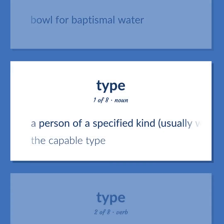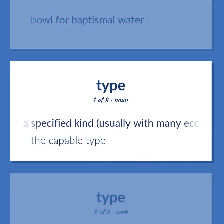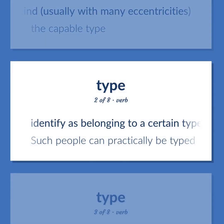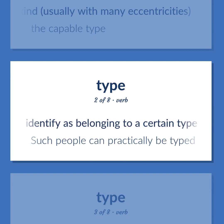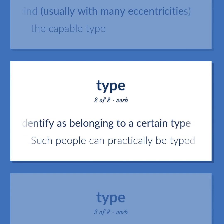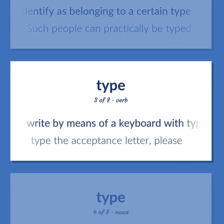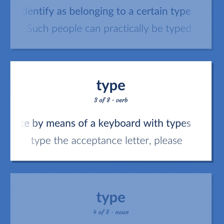A person of a specified kind, usually with many eccentricities — the capable type. Identify as belonging to a certain type — such people can practically be typed. Write by means of a keyboard with types — type the acceptance letter, please.